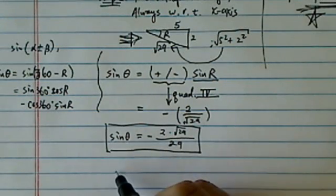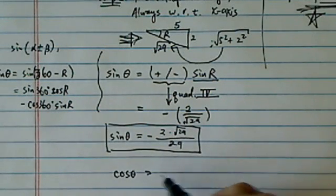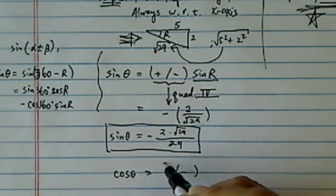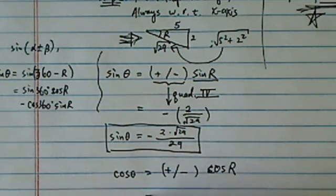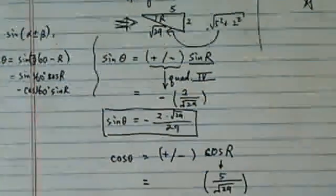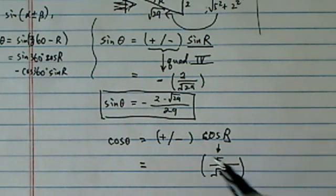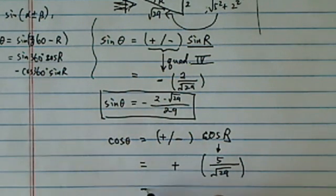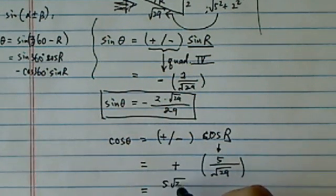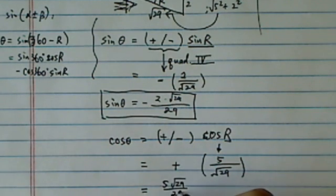Let's do the same thing. Cosine theta is related, it's either plus or minus cosine of r. And cosine r is really easy to do, it's 5 over radical 29. In quadrant four, where my terminal angle is, this cosine is a plus sign. So rationalize it, 5 radical 29 over 29 is my cosine of theta.